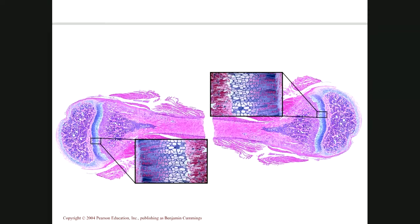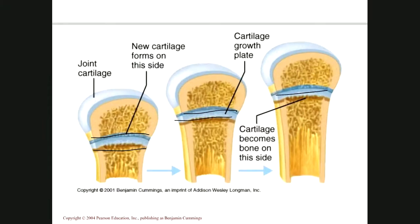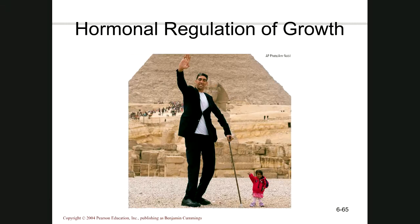Remember: the solid bone is in the middle diaphysis, and the ends are the epiphyses. The bone grows toward the ends because that's where the cartilage is growing. On one side of the plate, cartilage is growing, making the bone longer. On the other side, cartilage is being replaced by bone. Over time, the growth plate gets thinner, and eventually it disappears completely — bone growth stops.